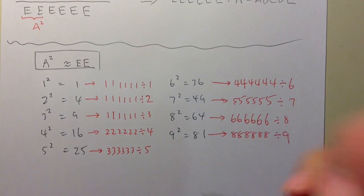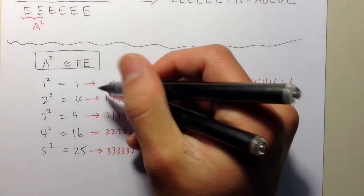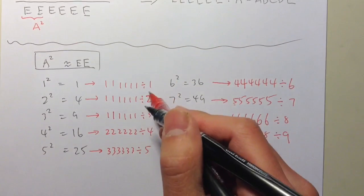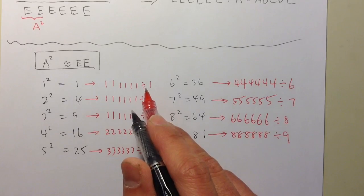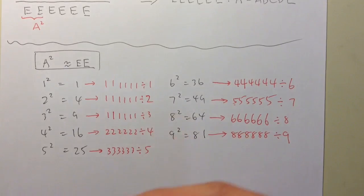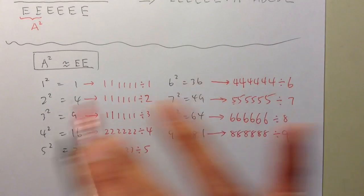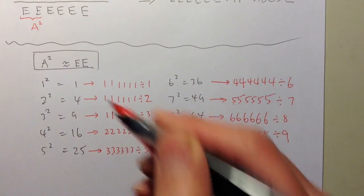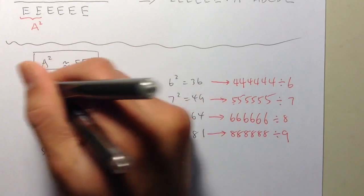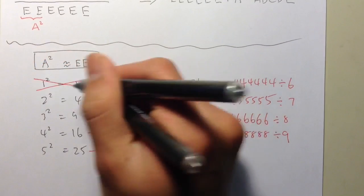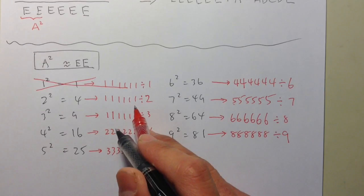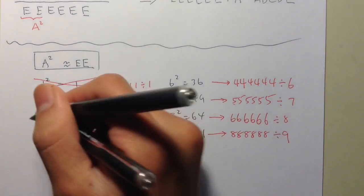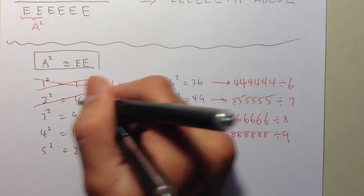We can further eliminate some of these. For sure, 111111÷1 is just 111111, a six-digit number of all 1s — not what we want. And 111111 is an odd number, so it's not divisible by 2. We can get rid of that as well.